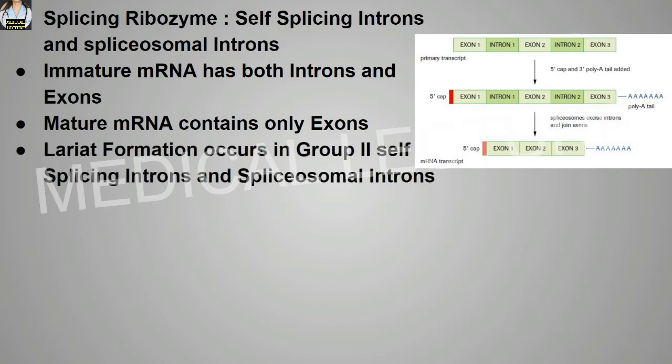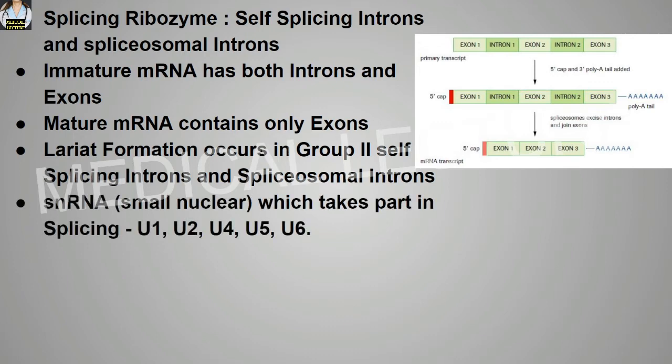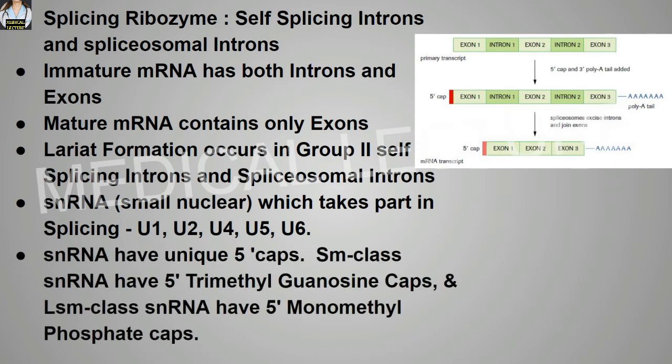Lariat formation occurs in group 2 self-splicing introns and spliceosomal introns. Small nuclear RNAs that take part in splicing are U1, U2, U4, U5, and U6. Small nuclear RNAs have unique 5' caps: Sm class snRNA have 5' trimethylguanosine caps, and LSm class snRNA have 5' monomethylphosphate caps.